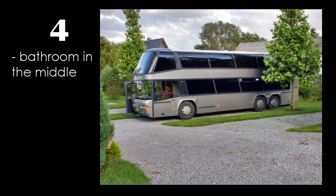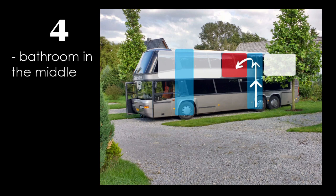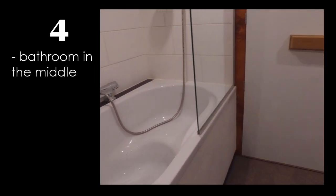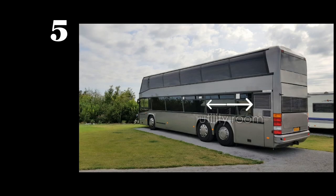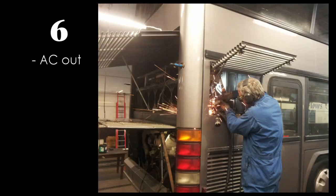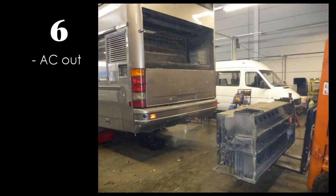Fourth, the bathroom would go upstairs in the middle - the most logical place, easily reachable from the stairs in the back. Because of the low ceiling height I chose a sitting bath to shower in. Fifth, downstairs the last four meters of the bus would become some kind of utility room. And sixth, the air conditioning that came with the bus was to be removed, as it only worked with the engine running and I suspected we'd use the bus more often with the engine off.